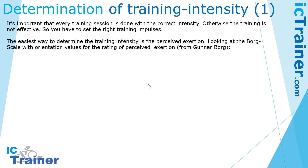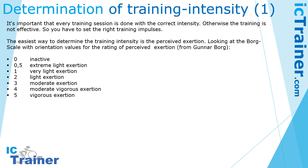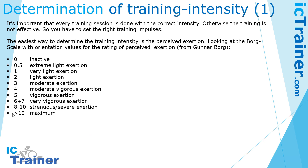The easiest way to determine the training intensity is the perceived exertion. There is a Borg scale with some orientation values, with inactive and light exertion and so on up to maximum.